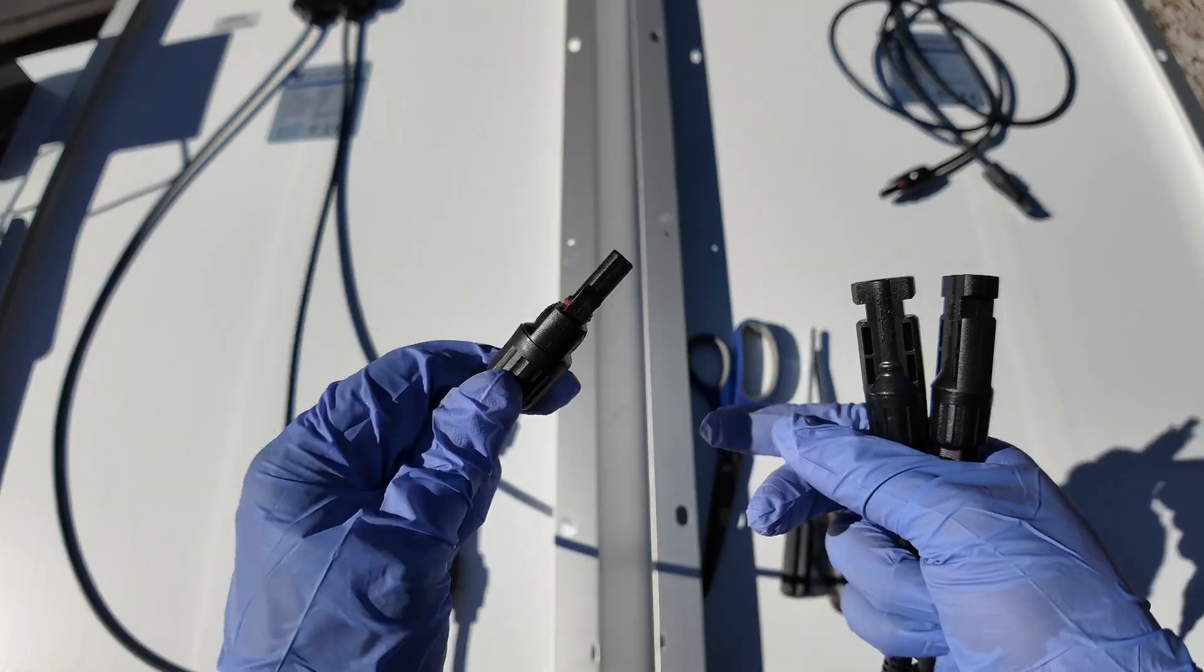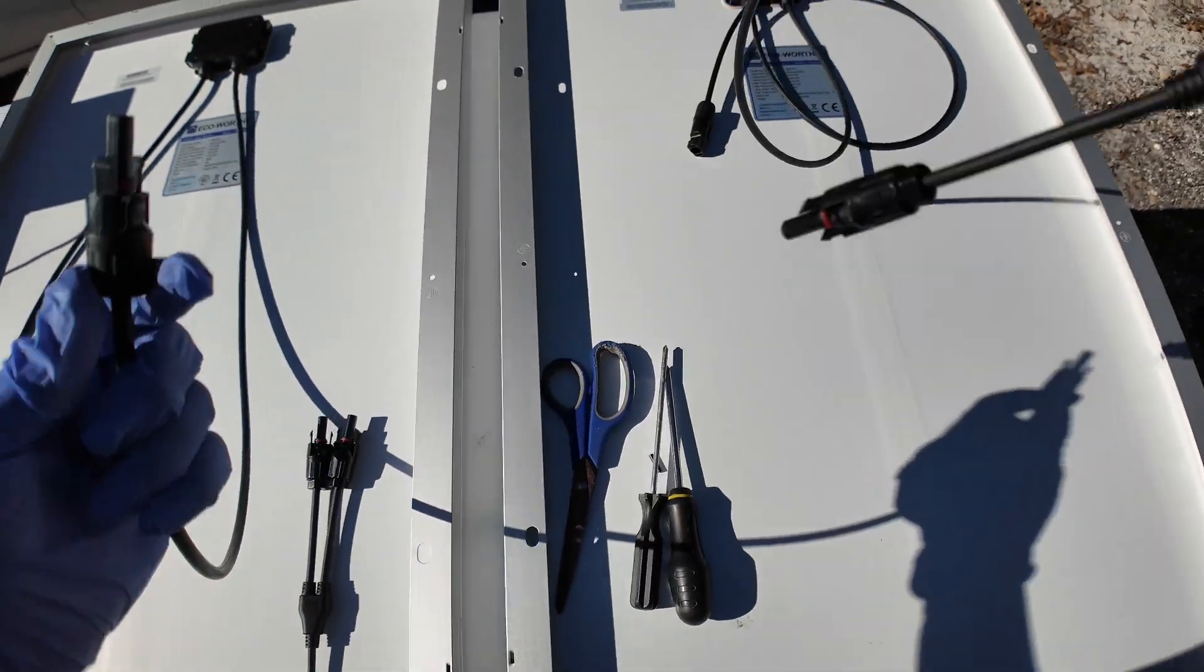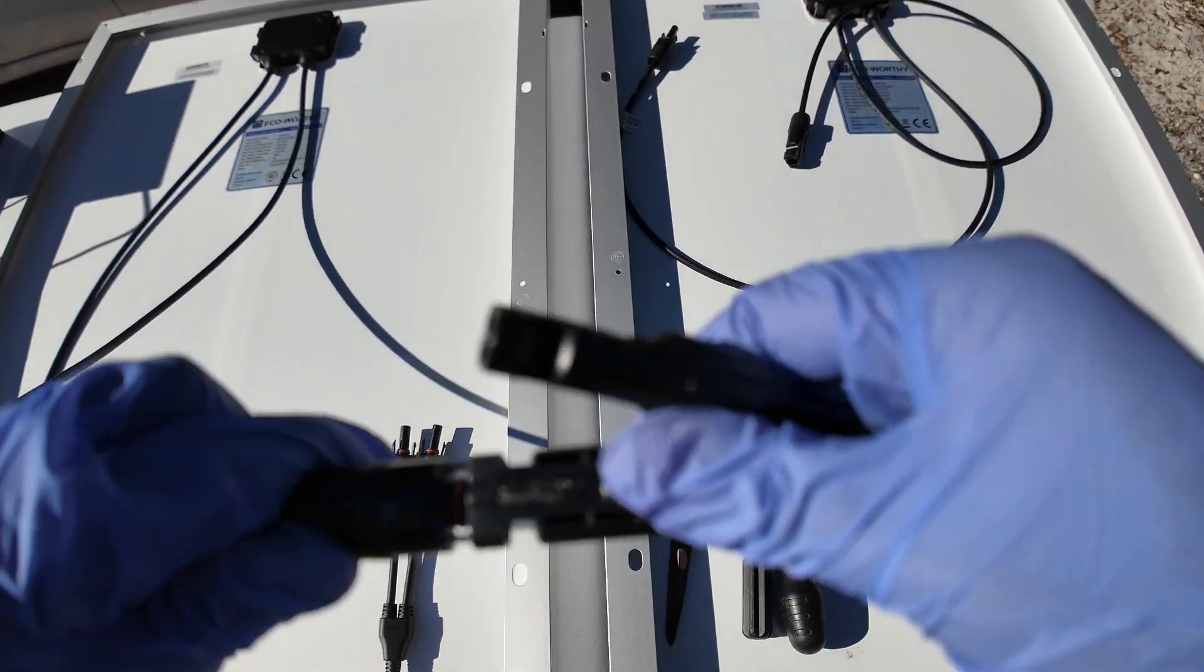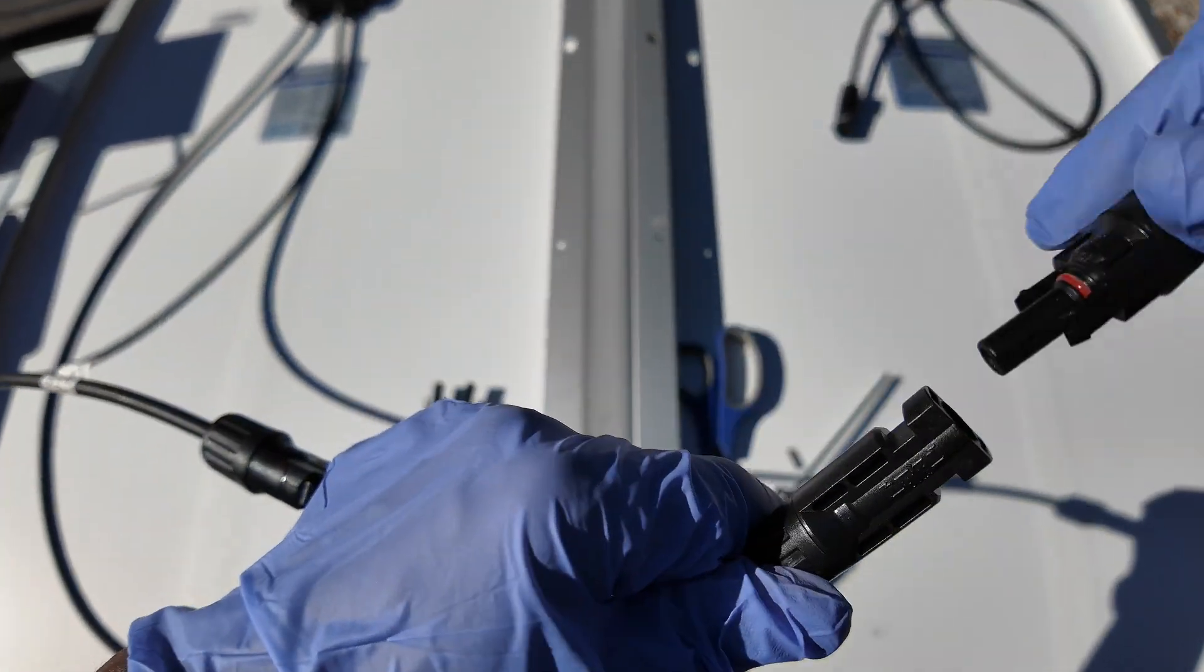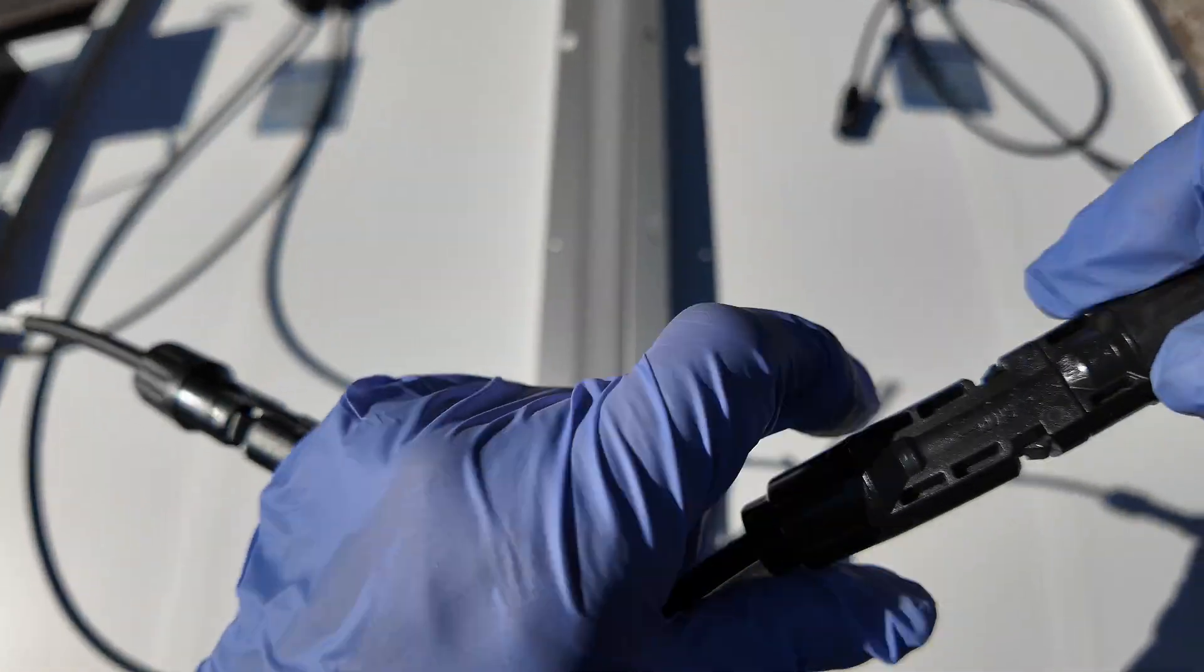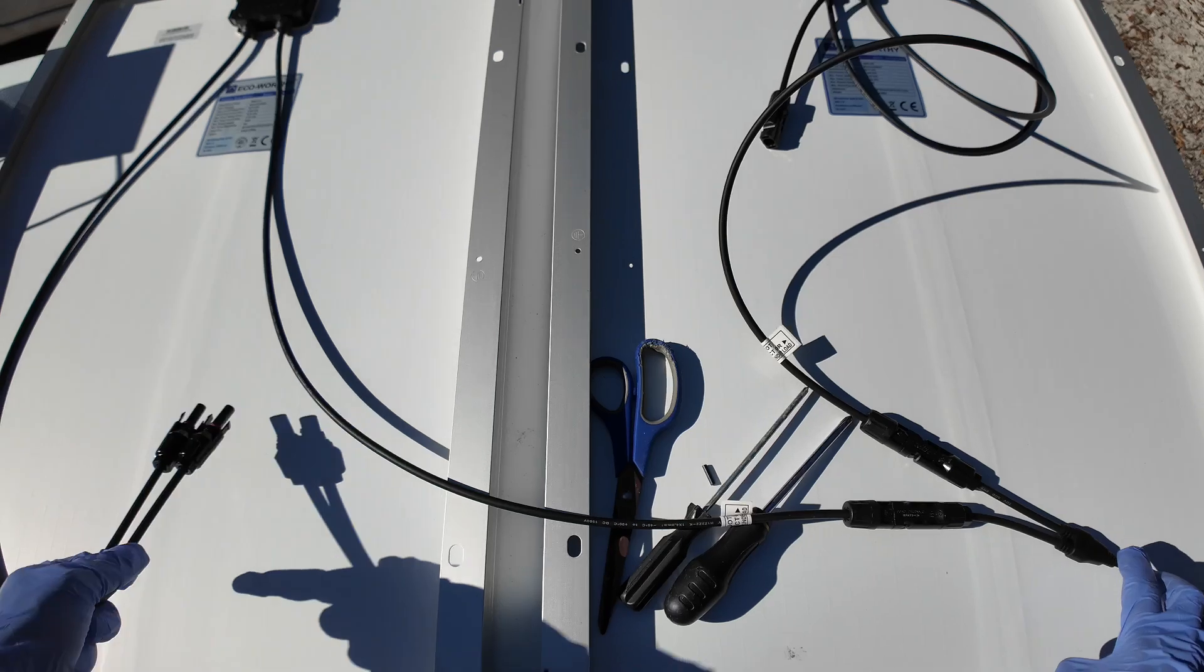Connecting the solar panels was probably my favorite part because it was the easiest in my opinion. Although all the connectors do display whether it's a positive or negative pole, you mainly just need to connect the male and female parts together until you hear a slight click.